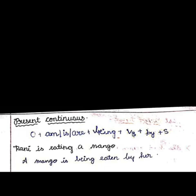Active and passive voice — this is the third class. Today we are going to see present continuous tense and how to change active to passive. For the present continuous tense, the formula is: object plus am/is/are plus being plus V3 plus by plus subject.